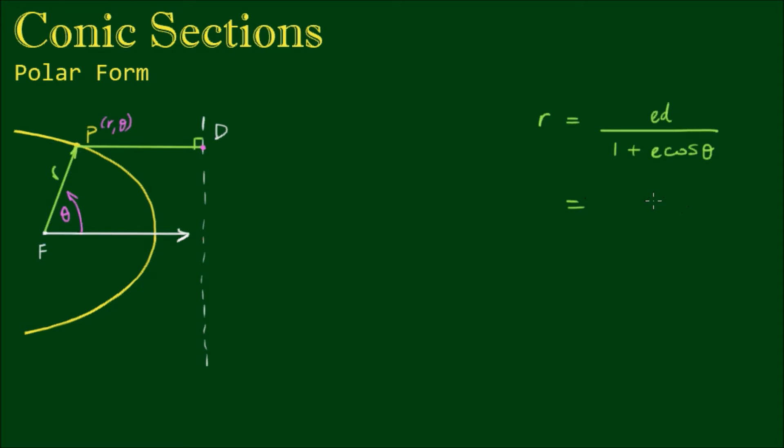Now you may have also seen the equation written as L divided by 1 plus E cos θ. So we've simply replaced ED with L, and this is because L is what we call the semi-latus rectum.